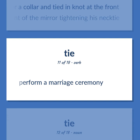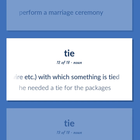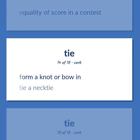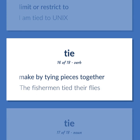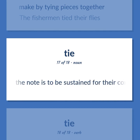Perform a marriage ceremony. A cord, or string, or ribbon, or wire, etc., with which something is tied. He needed a tie for the packages. Equality of score in a contest. Form a knot or bow in. Tie a necktie. Limit or restrict to. I am tied to this. Make by tying pieces together. The fishermen tied their flies. Music: a slur over two notes of the same pitch, indicating that the note is to be sustained for their combined time value. Unite musical notes by a tie.